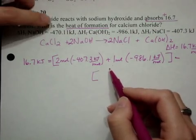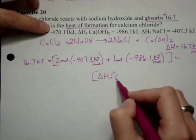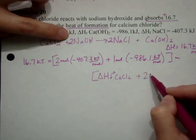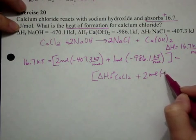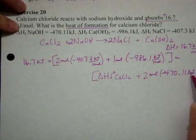On the reactants portion, calcium chloride is what we're looking for. So enthalpy of formation for CaCl2 plus two moles times the enthalpy of formation for NaOH, which is negative 470.11 kilojoules per mole.